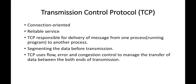The transport layer, however, provides process-to-process communication. Within a single computer there are many running processes. The network layer handles computer-to-computer communication, but the transport layer handles communication between specific application processes — for example, a WhatsApp application on my computer communicating with WhatsApp on a receiver's device.